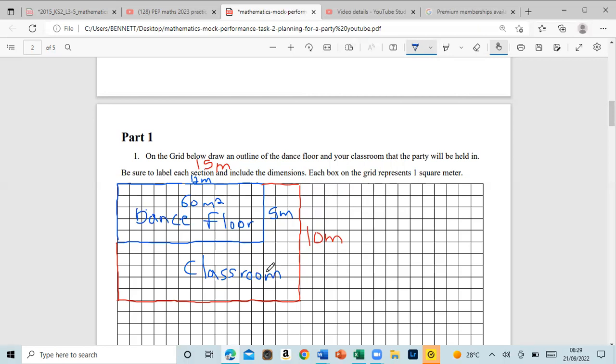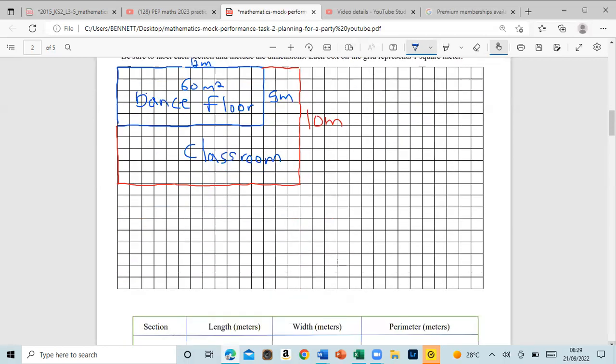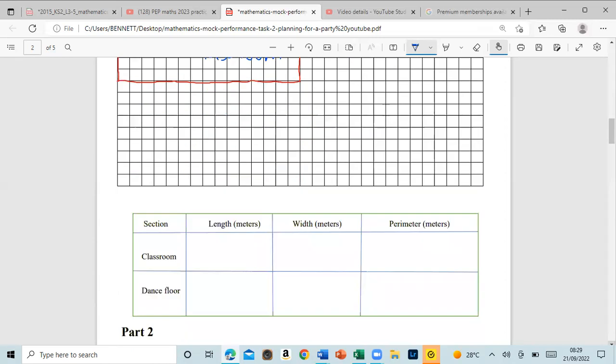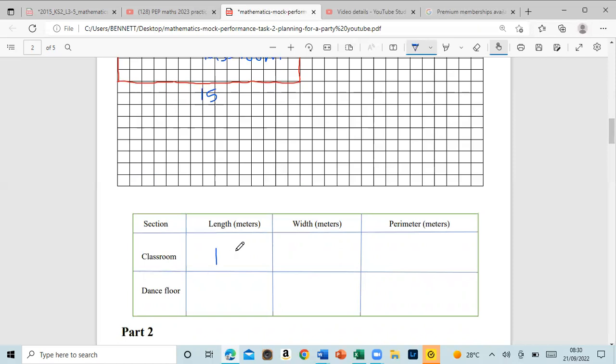This is the section they asked about. They asked the length in meters of the classroom. Remember, we said it was 15, so we can put in this information as 15. The dance floor is 12—this was actually given. The width of the classroom was 10, and the dance floor was 5, because the area should be 60.